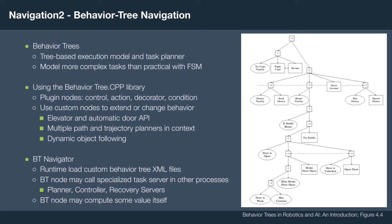We can do dynamic object following and have multiple different path and trajectory planners in different contexts. We also have the BT Navigator, which is the server that hosts our behavior tree, enabling you to load runtime configurable behavior tree XML files, where each XML file can include any number of custom plugins. These plugins can call specialized servers such as your planner, controller, or recovery servers, but they might also compute some value themselves, like calling an elevator API.